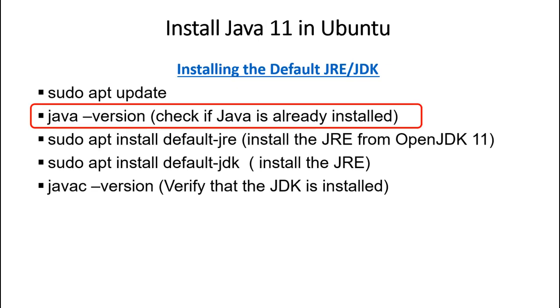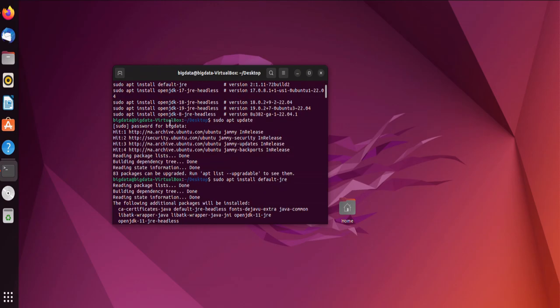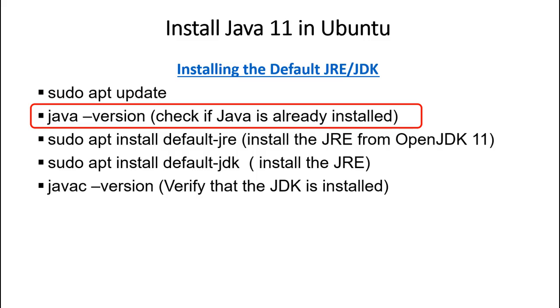Next, we'll check if Java is already installed. Just type java --version. If Java is installed, you will see the version information. If not, you'll receive a message indicating that it's not installed.